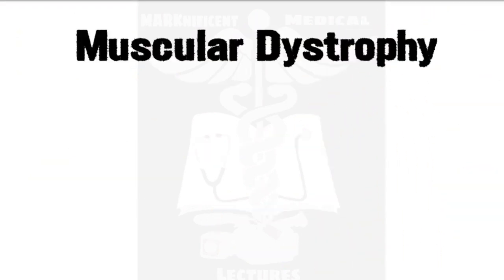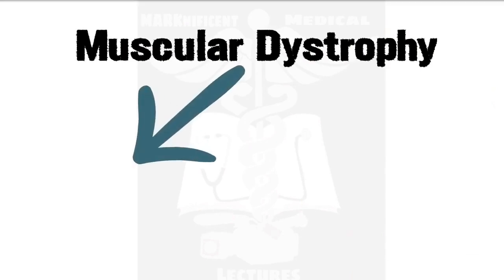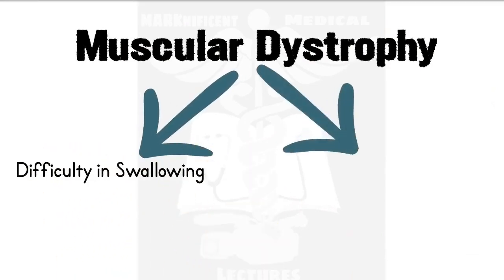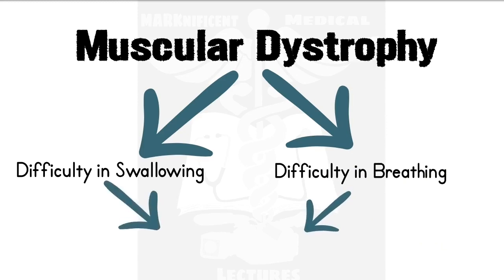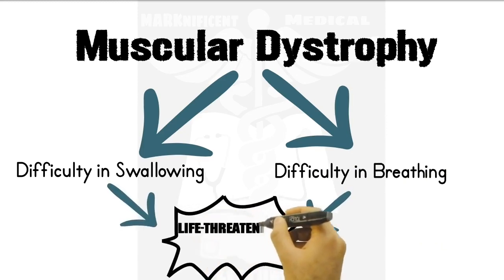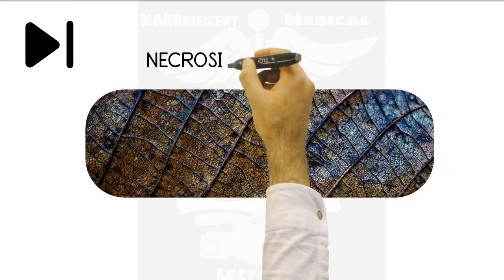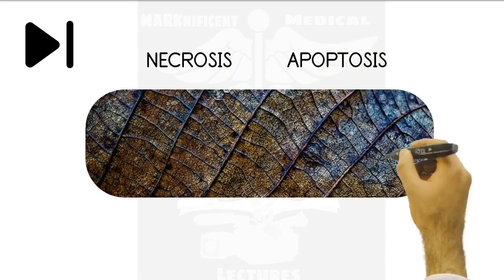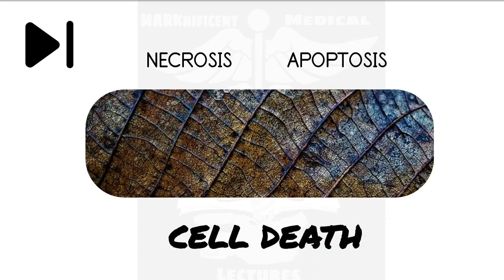Myotonic and Duchenne muscular dystrophy, as well as any other type of muscular dystrophy, can get very serious — extremely serious and life-threatening when there is difficulty in swallowing and difficulty in breathing. As of yet, there is no cure for muscular dystrophy. The next video in this pathology series will be on cell death, specifically necrosis and apoptosis, which are the major types of cell death. Make sure to subscribe and get notified as soon as those videos drop.